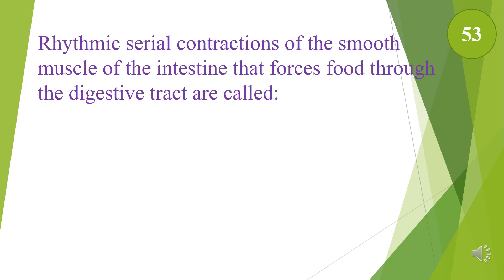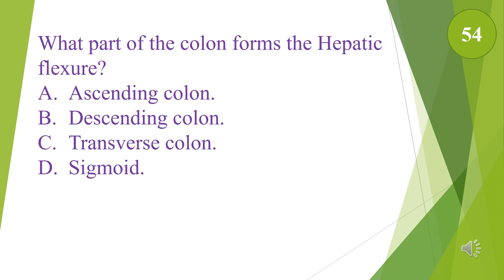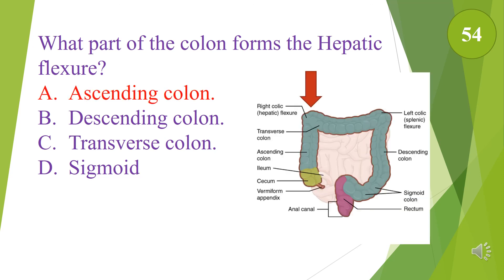Rhythmic serial contractions of the smooth muscle of the intestine that forces food through the digestive tract are called peristalsis. What part of the colon forms the hepatic flexure? A. Ascending colon. B. Descending colon. C. Transverse colon. D. Sigmoid. The answer is A, ascending colon.